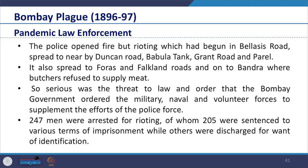The police opened fire, but rioting which had begun on Bellassus Road spread to nearby Duncan Road, Babula Tank, Grant Road and Perel. It also spread to Foras and Falkland Roads and to Bandra where butchers refused to supply meat. So serious was the threat to law and order that the Bombay government ordered the military, naval and volunteer forces to supplement the efforts of the police. 247 men were arrested for rioting, of whom 205 were sentenced to various terms of imprisonment while others were discharged for want of identification.